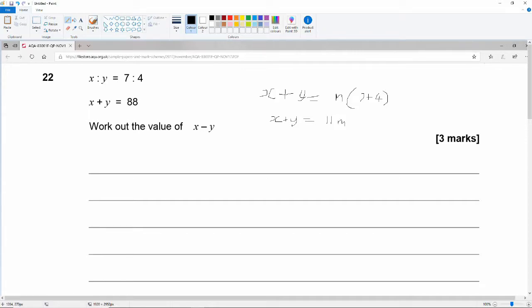So we can say that if x plus y is 88, and x plus y must be 11 times a common multiple, then that multiple must be 8. So there's 8 times 11 is 88. So m is equal to 8.